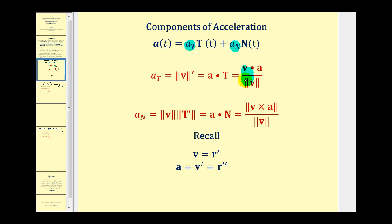Both formulas require us to find the velocity vector valued function as well as the acceleration vector valued function. For the tangential component, we dot v and a and then divide by the magnitude of v. For the normal component, we cross v and a, find the magnitude, and divide by the magnitude of v. To determine v, we find r prime, and to determine a, we find v prime or r double prime.